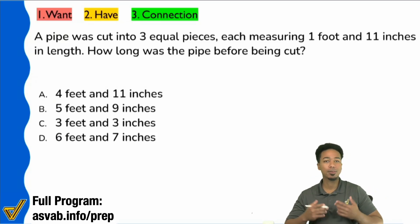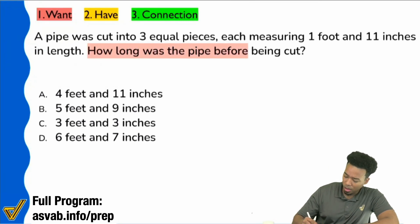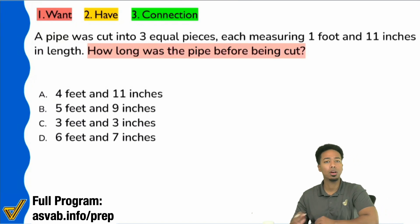The first thing we always want to do when it comes to word problems is read the question. You know, what's the overall goal, what's the conclusion to the story? So we're going to go straight to the question sentence and it says right here, 'How long was the pipe before being cut?' What are we looking for? In your own words, in a couple of words, what is it that we're trying to look for from that red highlight?